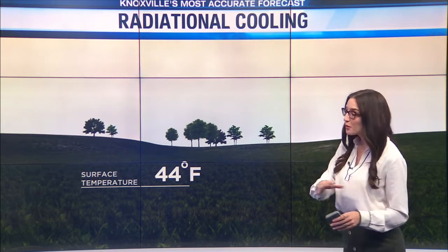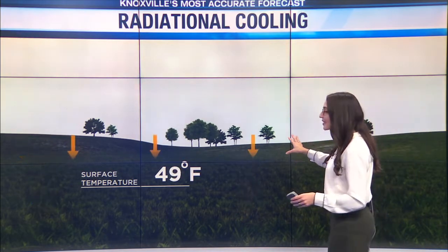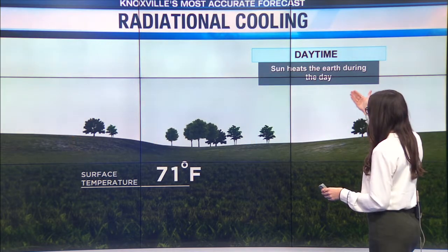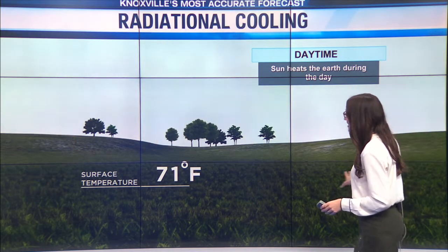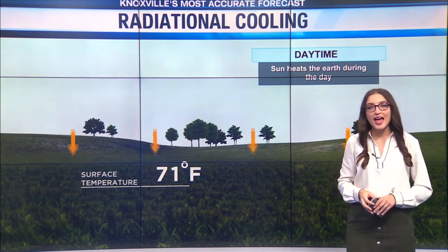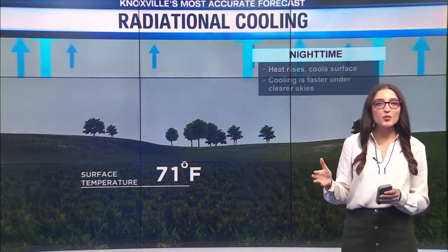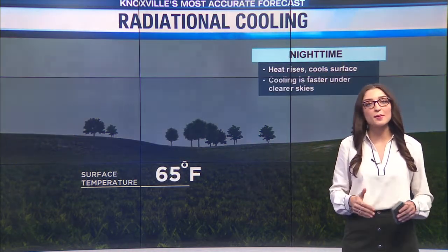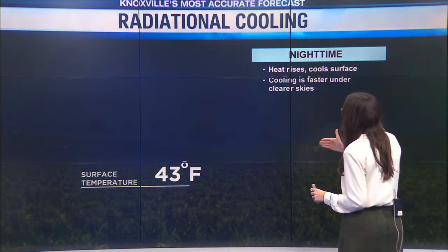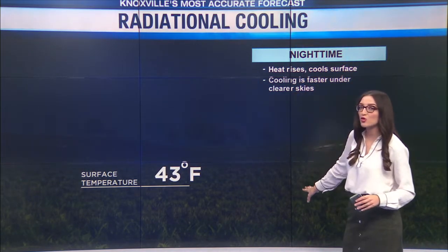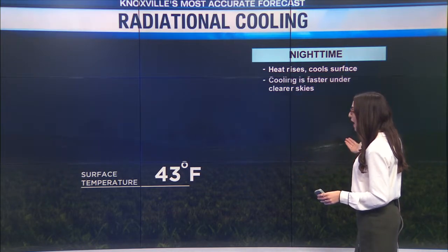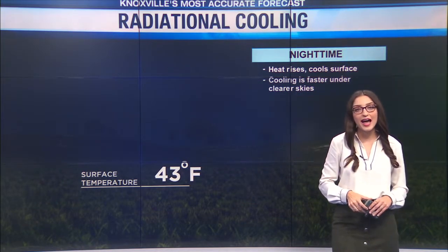The term radiational cooling may sound complex, but you probably already know this process. The sun is heating up the atmosphere during the daytime hours, warming up our surface temperatures. Then at night when the sun goes away, we see our surface temperatures start to drop. Essentially, heat is rising and it cools the surface. You are going to see cooling happen faster when we have clear skies.